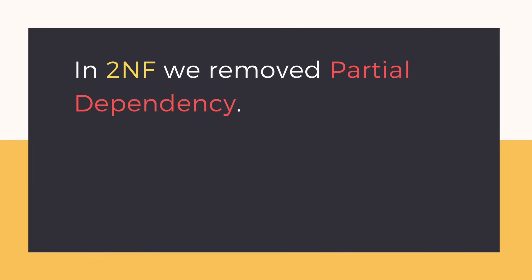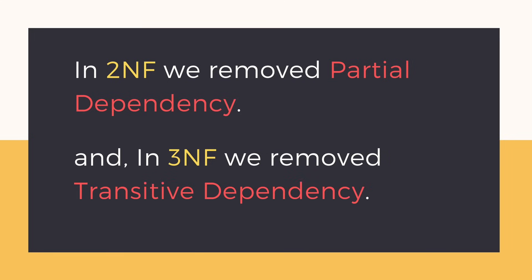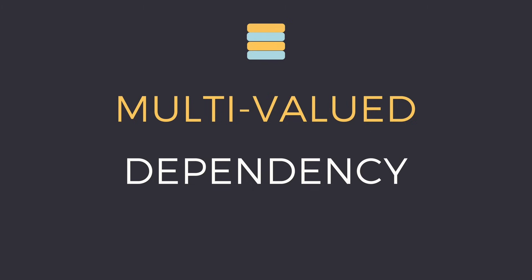To satisfy second normal form we removed partial dependency, and then in the third normal form we removed transitive dependency, and this time it is multi-valued dependency.